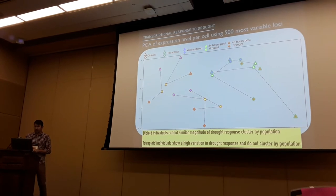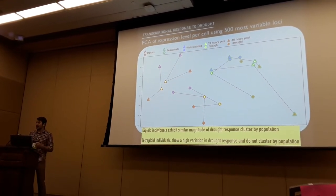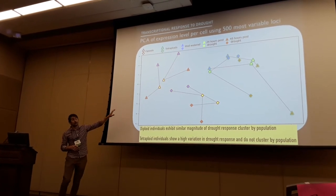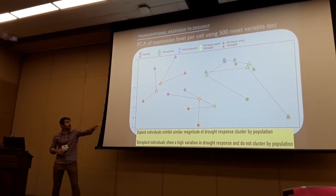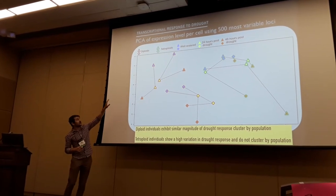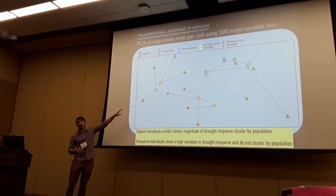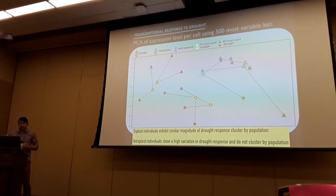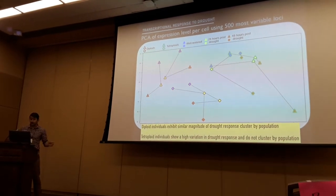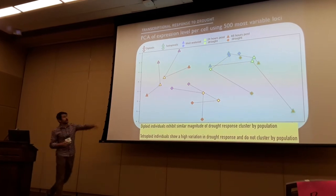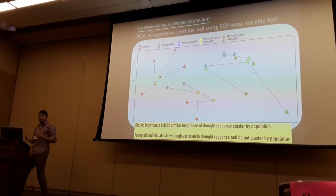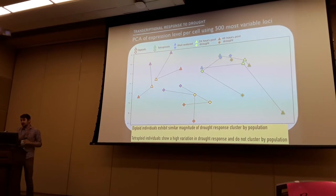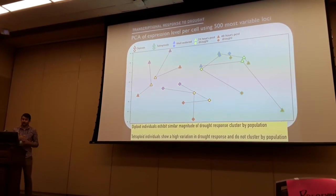This is a principal component analysis of expression level per cell — a proxy for absolute abundance differences — using the 500 most variable loci. Diploid individuals are outlined in red, tetraploid in green. Each individual through time is connected by dotted lines: time zero has a blue center, 24 hours post-drought yellow, and 48 hours orange. The tetraploid and diploid individuals are pretty well separated. The diploid individuals cluster by population, and the magnitude of drought response is fairly consistent amongst diploids across both 24-hour periods.